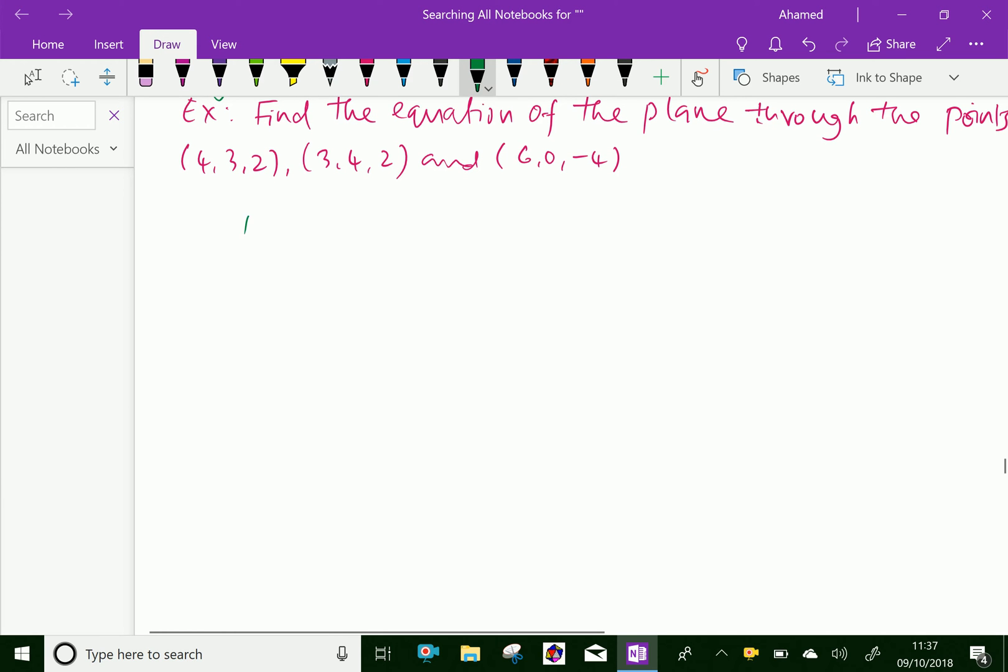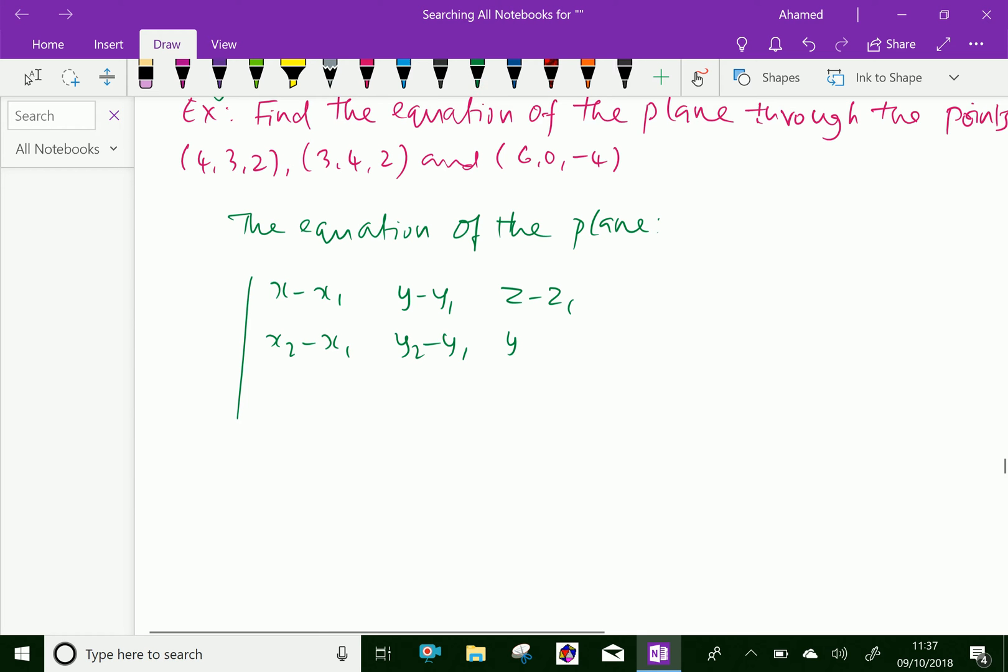The equation of the plane: x minus x1, y minus y1, z minus z1, then x2 minus x1, y2 minus y1, z2 minus z1, and x3 minus x1, y3 minus y1, and z3 minus z1 equal to 0.